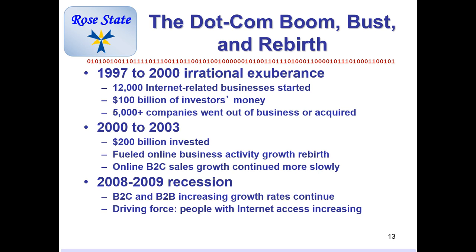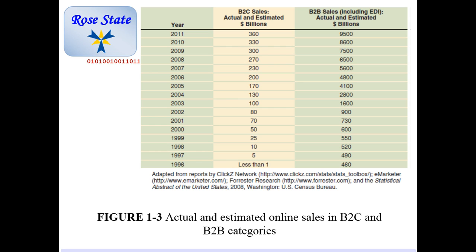In 1997 when the dot-com boom started, there were 12,000 internet-related businesses and $100 billion in investor capital. By the end, 5,000 companies went out of business or were acquired. From 2000 to 2003, $200 billion — double the prior investment — fueled a new boom era. eBay and Amazon really started gaining a hold on e-commerce. During the 2008–2009 recession, growth rates continued to increase even as overall sales decreased because internet access and bandwidth were improving. They were estimating $9.5 trillion in e-commerce sales by 2011.